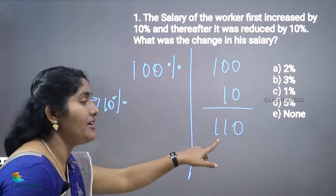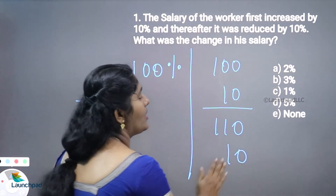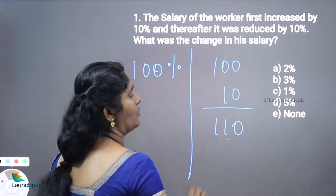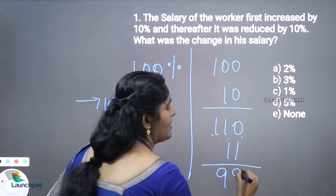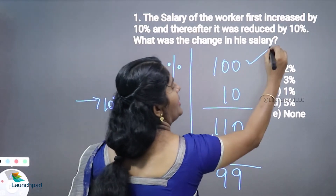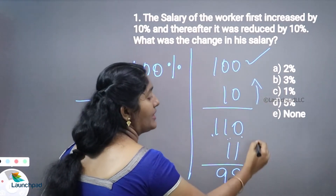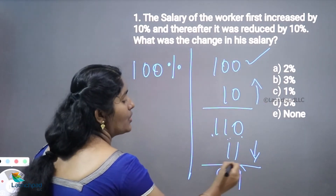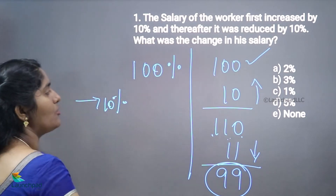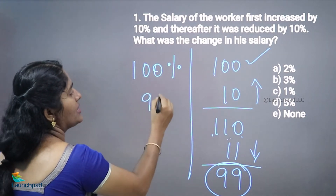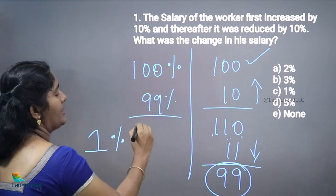Now this 110 rupees is reduced by 10%. Don't consider this as 10 — what is 10% of this current value? 10% of 110 is 11, so the result is 99. The initial value was 100 and the ending value is 99, so how much was reduced from the initial 100%? That is 1% will be decreased.